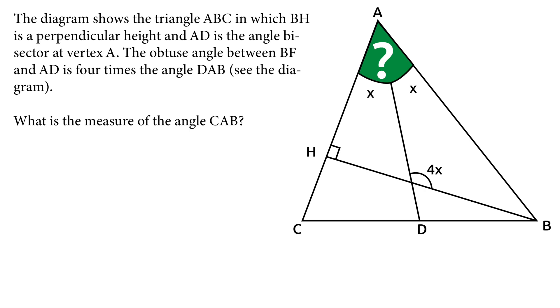The diagram shows the triangle ABC in which BH is a perpendicular height and AD is the angle bisector at vertex A. The obtuse angle between BF and AD is 4 times the angle DAB. What is the measure of the angle CAB?